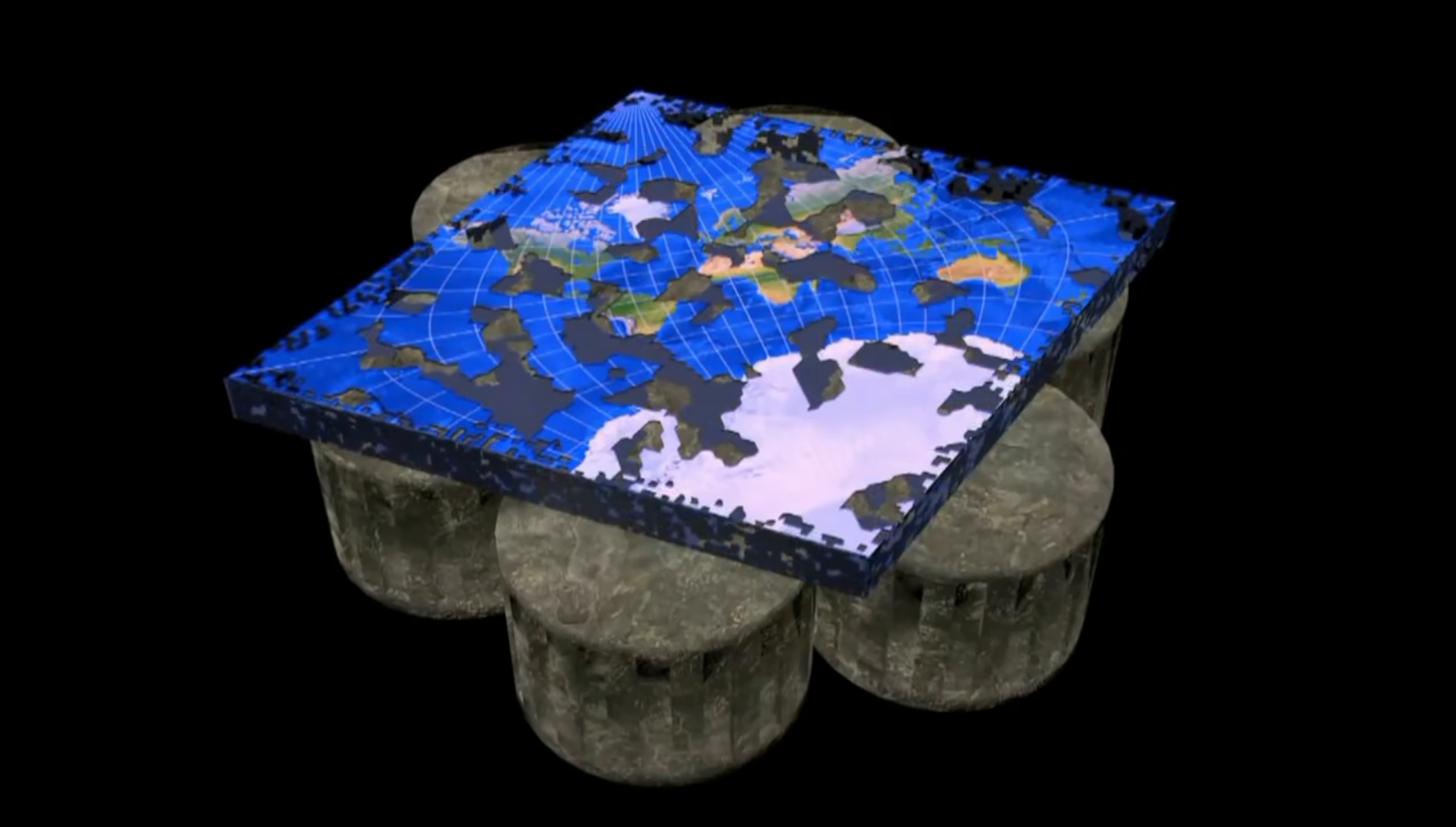We have the map with the shape of the continents as we're used to, but on a four-cornered, four-dimensional earth.